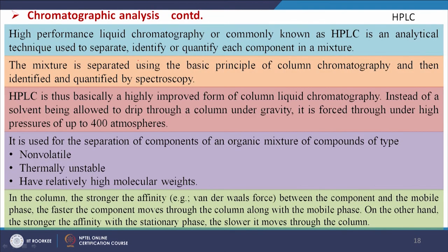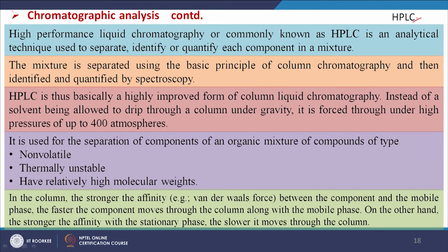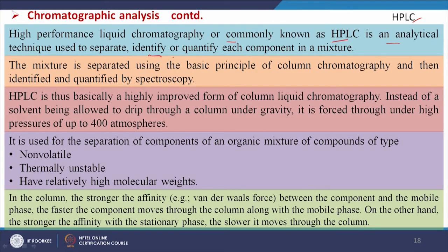Now we will discuss liquid chromatography and high performance liquid chromatography — HPLC. In HPLC the mobile phase is liquid, not gas. There is a stationary phase in an HPLC column. HPLC is an analytical technique used to separate, identify, or quantify each component in a mixture. Elements with different affinities for the stationary phase are captured at different locations in the column. Some elements come out fast and others follow depending on their affinity — but under gravity the separation may not be very precise.